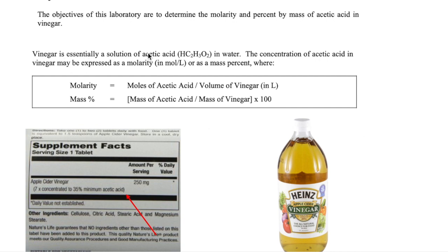Vinegar is a mixture of acetic acid, which has the formula HC2H3O2, and water. The concentration of acetic acid can be calculated using two measurements: molarity and mass percent. To calculate molarity, you take the number of moles of acetic acid divided by the volume of your vinegar. Mass percent is calculated by taking the mass of acetic acid divided by the mass of vinegar, then multiplying by 100%.